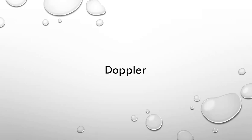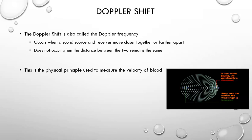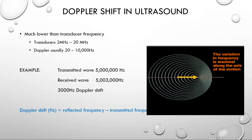Let's get to Doppler. The Doppler shift, also known as the Doppler frequency, occurs when sound and the receiver are moving closer together or farther apart. It does not occur when they are moving relative to each other at the same rate. This is the principle we use to measure the velocity of blood in the body. The Doppler shift in ultrasound is much lower than the transducer frequency — the transducer frequency is between 2 MHz and 20 MHz, while the Doppler frequency is usually between 20 to about 14,000 Hz, which is within the range of audible sound.